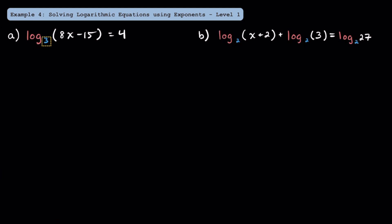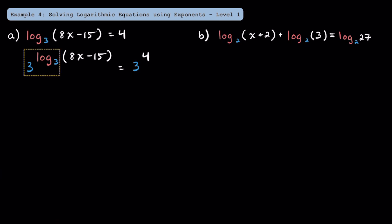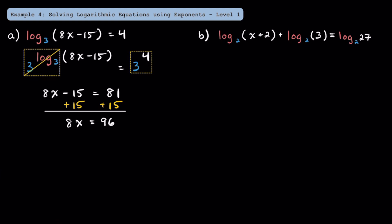To get rid of this log base 3 on the left side, you have to focus on the base of the logarithm, which is 3 here. We're going to rewrite both sides as exponents with bases of 3. On the left side, 3 to the log base 3 power is going to cancel out, and we're left with 8x minus 15, and on the right, 3 to the 4th power equals 81. Then we can add 15 to both sides to get 8x is equal to 96, and dividing both sides by 8, we find that x is equal to 12.